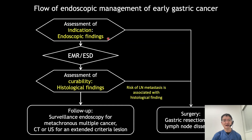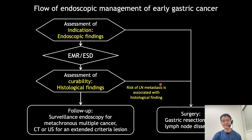I would like to explain about the difference between indication and curability. Indication is determined whether to perform ESD or surgery before treatment, and is basically determined by clinical findings, meaning endoscopic findings. While curability is determined by histological findings — whether there is no risk of lymph node metastasis or not. If histological findings do not fulfill curative resection criteria, additional surgery is recommended.